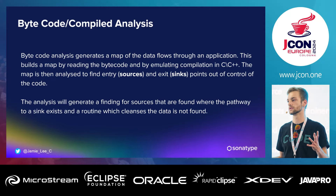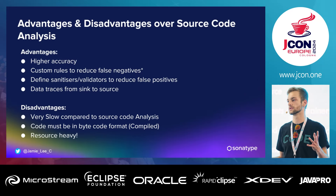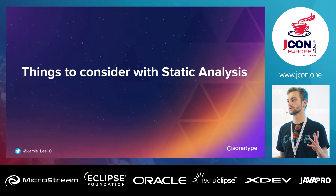Bytecode analysis essentially generates a map of the data flows through your application. This map is built by reading the bytecode and emulating compilation in Java, and is then analyzed to find entry sources and exit sinks — points of control of our code. The analysis generates findings for sources where pathways to a sink exist but no cleansing routine is found. Advantages include higher accuracy, custom rules to reduce false negatives, and data traces from sink to source. However, it's very slow, the code must be compiled, and it's resource-heavy.